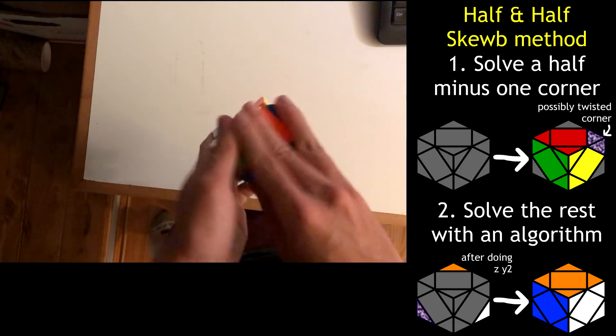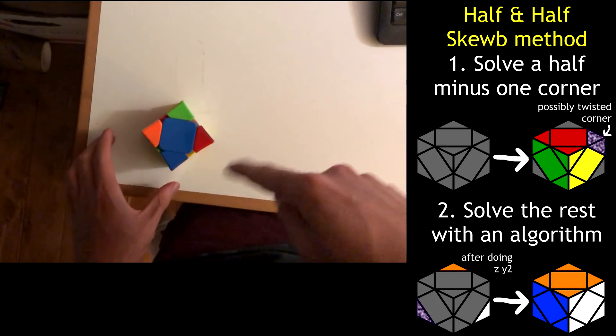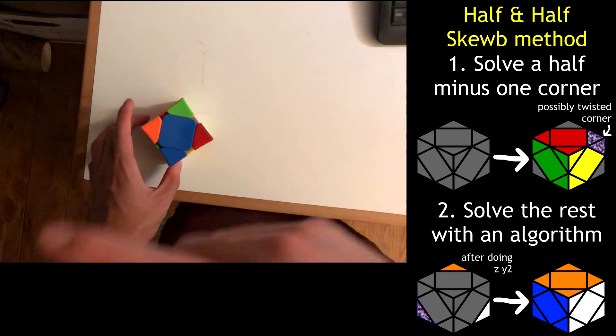Got it? Good. Okay, so now let's get started. So I'm going to scramble it, and then do step one, which is to solve half of a SCUBE minus a corner.